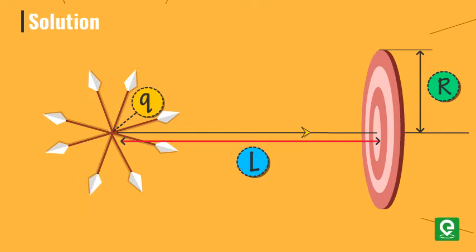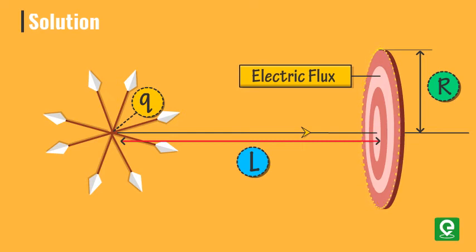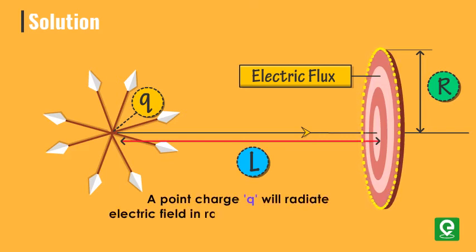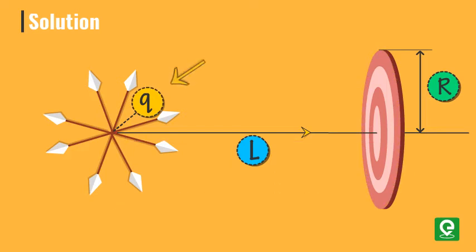We know that a point charge originates its electric field in all directions. Here we need to find the electric flux through the disk surface due to the point charge q. We also know that the point charge q will radiate electric field in radially outward direction.